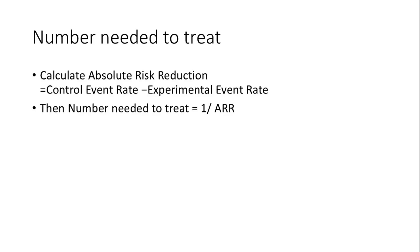To calculate number needed to treat, we first need to determine the absolute risk reduction, which is the difference between the control event rate and the experimental event rate. We then calculate the number needed to treat as 1 divided by the absolute risk reduction. A lower NNT means the treatment is more effective.